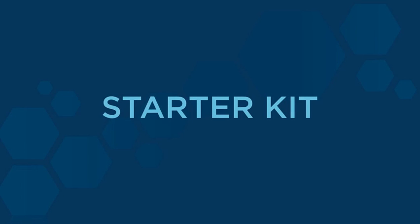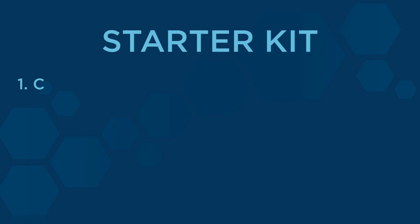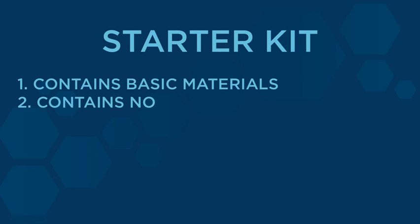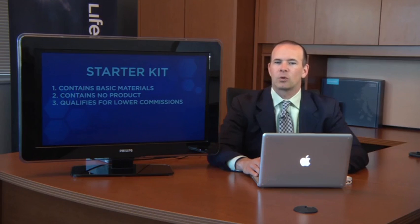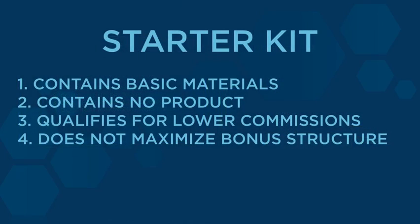The second way to get involved is as a distributor by enrolling with the starter kit for $49.95. Now the starter kit contains tools only, it does not contain any product. Therefore, by enrolling with just a starter kit you will not be qualified to earn any of the bonuses, so you must also purchase at least $100 in product in order to qualify to earn bonuses. But still you will not be qualified to maximize the earning of each of these bonuses.